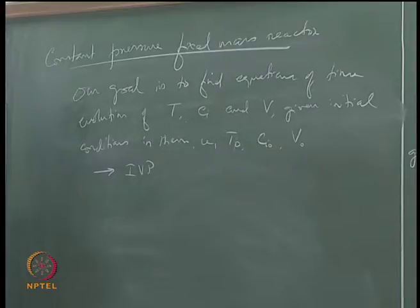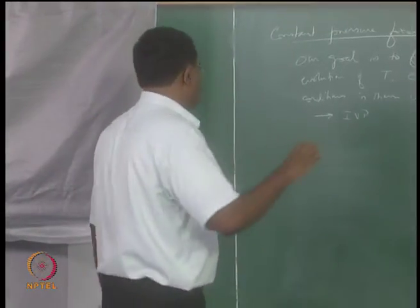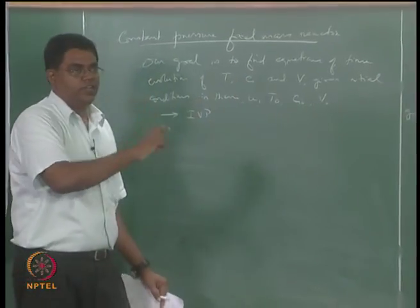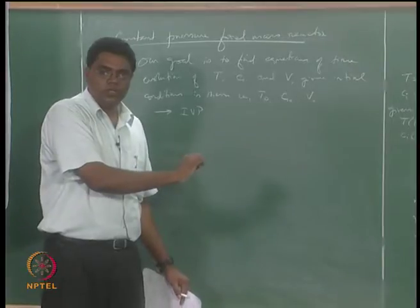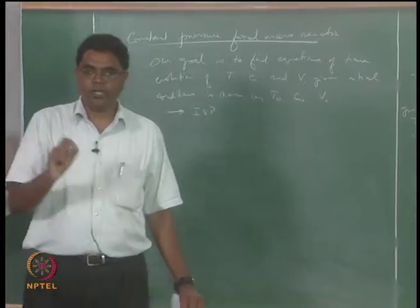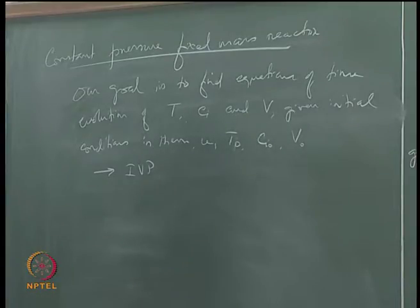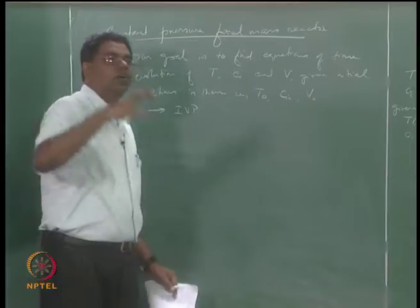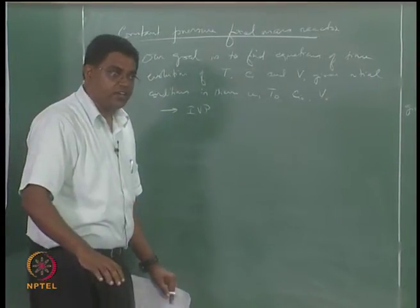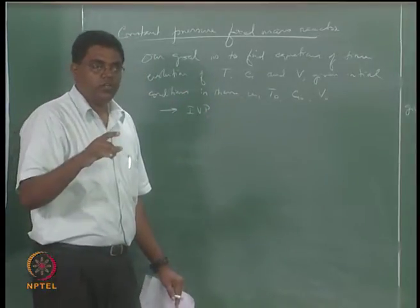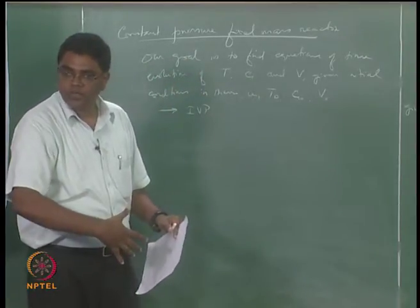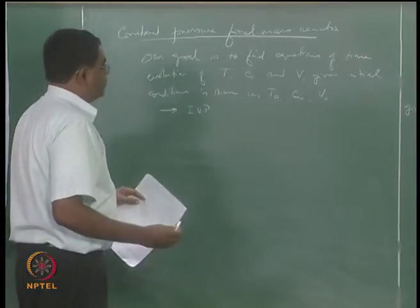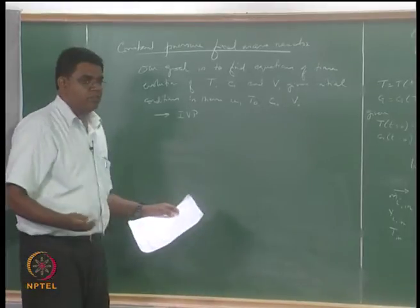How would you do this? The broad outline for any of these approaches is: as far as species concentration is concerned, we have to apply conservation of mass of individual species. As far as temperature is concerned, we have to look at a global energy balance. Each of these equations depends on all the variables — the equation for the i-th species mass balance will depend on all concentrations C_i and T, and the global energy balance will not only depend on T but also all the C_i's.